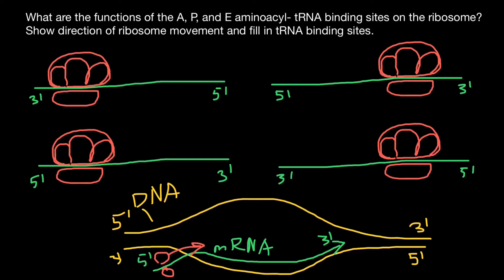First, the small ribosomal subunit would attach to the messenger RNA, and then the large ribosomal subunit would attach to the small subunit. As you see, it has three sites — we are going to give names to the sites, but let's first show the movement of the ribosome. It's going to move from 5' end to 3' end. So here it moves in this direction, here in this direction, here in this direction, and here in this direction. We have shown all four directions for all four pictures.